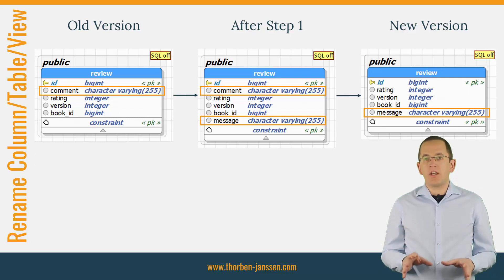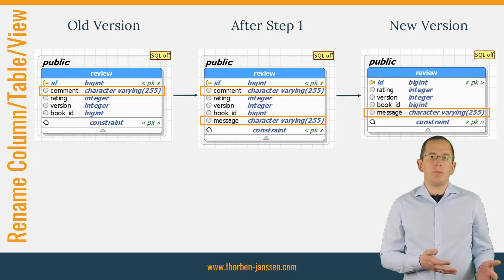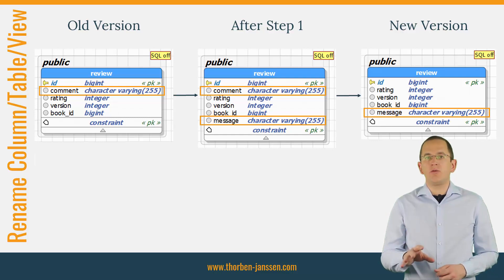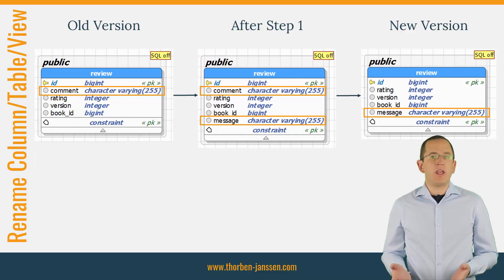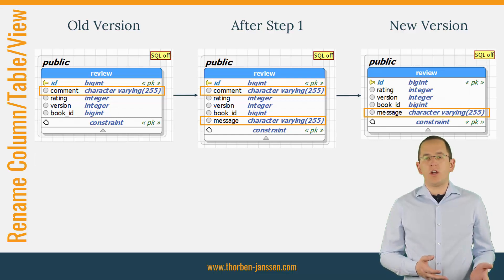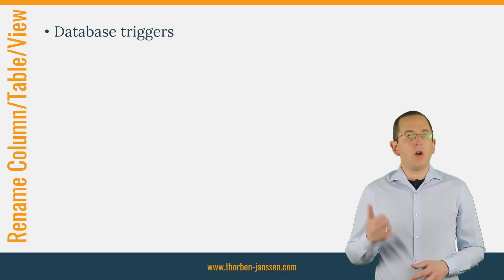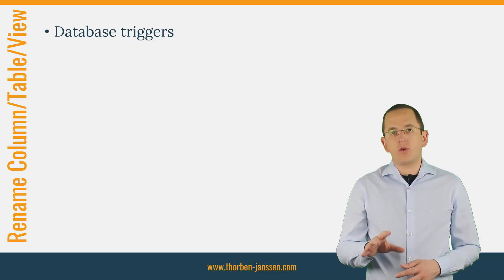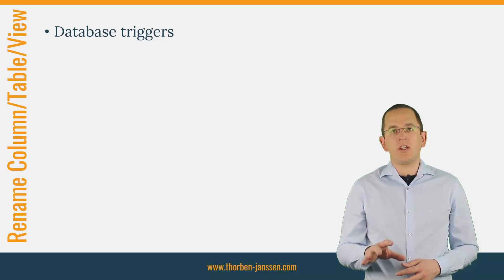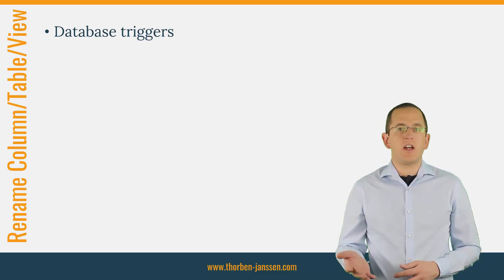While you are updating your application instances, you are running old and new versions of your application in parallel. The old version is still using the old database column, and the new one is using the new column. So you need to make sure that both use the same data and that you don't lose any write operations. There are two general ways to achieve that. Option 1: Sync with database triggers.